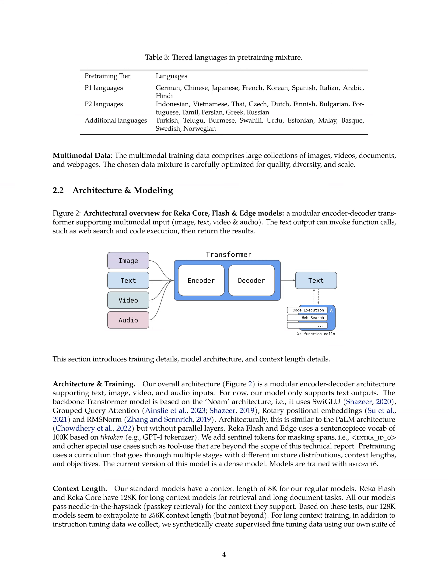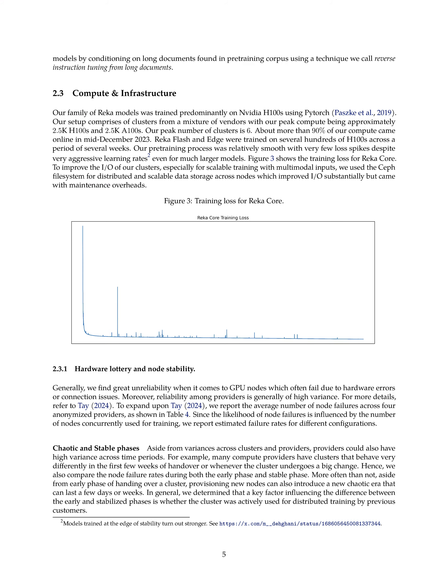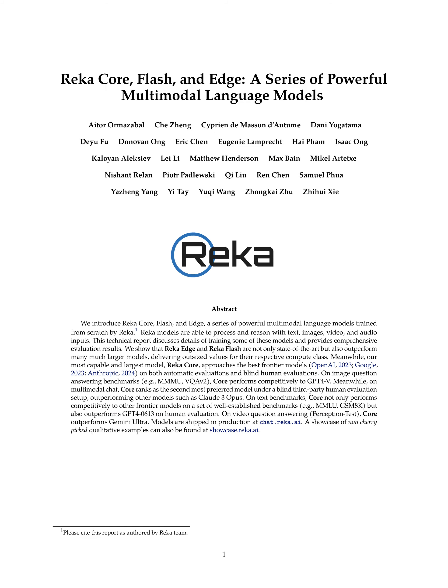The models are trained with BFLOAT-16 and have a context length of 8K for regular models, while long context models like RECA Flash and RECA Core have 128K for tasks requiring retrieval and handling long documents. The training process involves synthetic creation of supervised fine-tuning data using a technique called reverse instruction tuning from long documents. The models are trained predominantly on NVIDIA H100s using PyTorch, with clusters from various vendors and peak compute of approximately 2.5K H100s and 2.5K A100s, with I/O performance optimized using the Ceph file system.